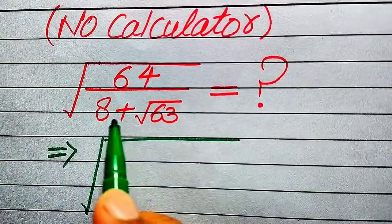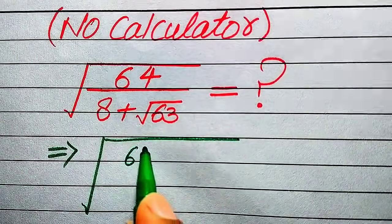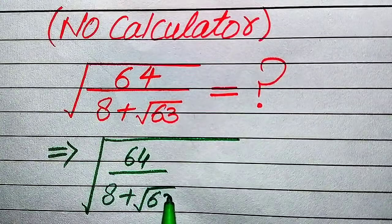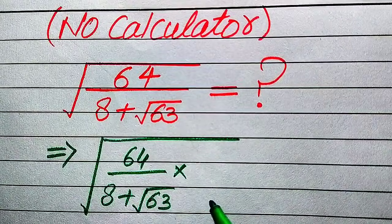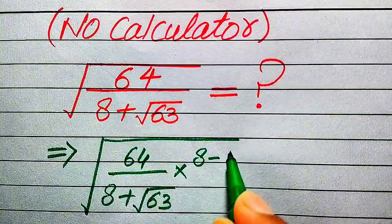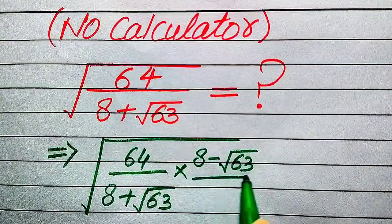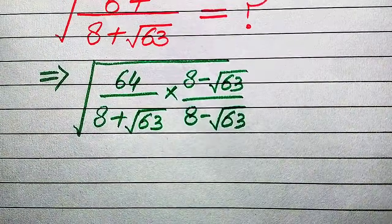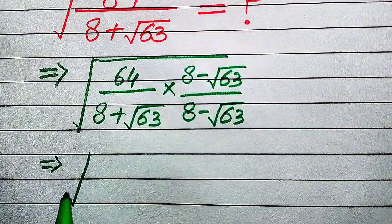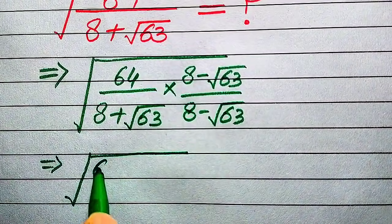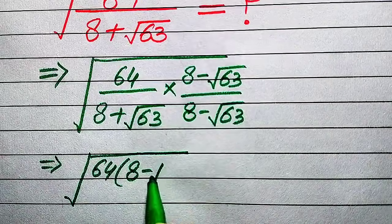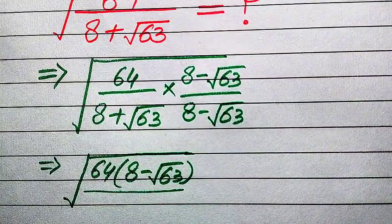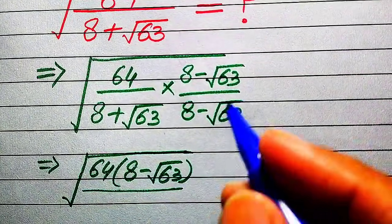First we need to rationalize the denominator. Our denominator is 8 plus square root of 63, and we change the sign to get the conjugate 8 minus square root of 63, multiplying and dividing inside the square root sign. So we multiply by (8 minus square root of 63) divided by (8 minus square root of 63). In the denominator we multiply the corresponding terms.